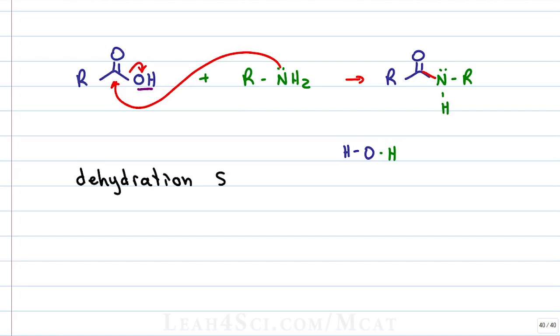This is dehydration synthesis because we're dehydrating, we're taking out water in order to synthesize a new bond between carbon and nitrogen. You can also think of this reaction as addition elimination because nitrogen is adding to the carbonyl but the hydroxy group is being eliminated, kicked out to form the final product. Is this how it forms in the cell? Not quite.